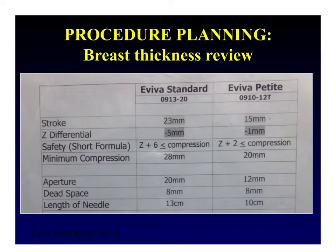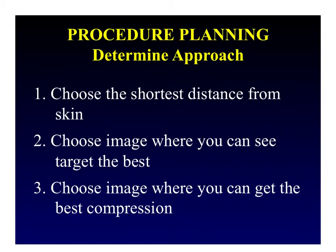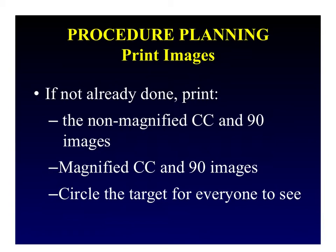Now we'll discuss how to determine your approach. First, choose the distance that is shortest from the skin surface. If the target is equidistant from the skin in two different approaches, you can choose the approach where you can see the target best, or where you can get the best compression. Finally, print the non-magnified CC and 90 degree lateral images as well as magnified images, and circle the target so everyone is aligned at the time of the biopsy.